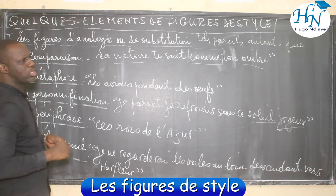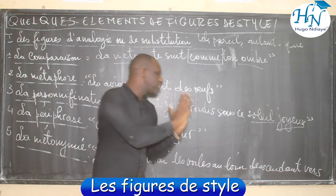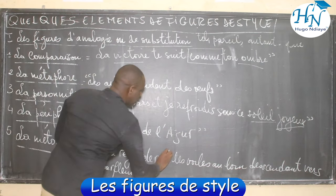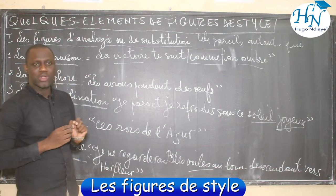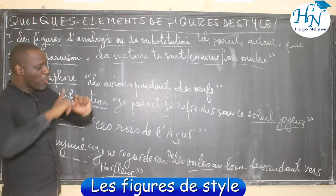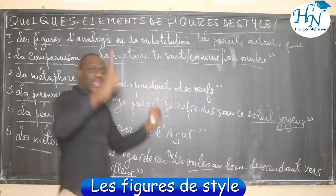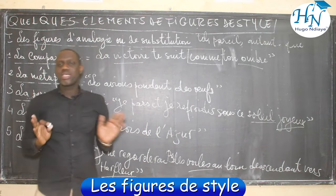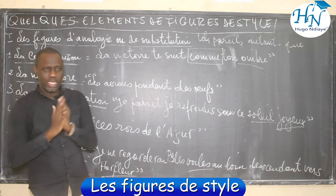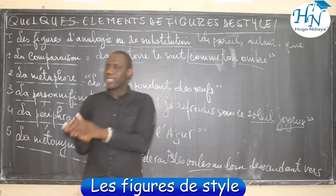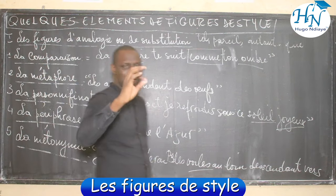Nous avons la métonymie. La métonymie n'est rien d'autre que le contenant pour le contenu ou vice-versa. Victor Hugo dit : « je ne regarderai pas les voiles au loin descendant vers Harfleur. » Quand Hugo dit « voile », il fait allusion au bateau — c'est le contenu pour le contenant. Quand il dit Harfleur, il fait allusion au port qui se trouve en France. Si on dit « j'ai lu Zola », c'est-à-dire « j'ai lu Germinal » ; « j'ai lu Hugo », c'est-à-dire « j'ai lu Les Contemplations ».